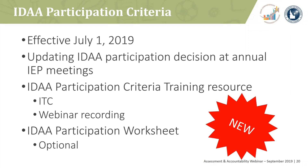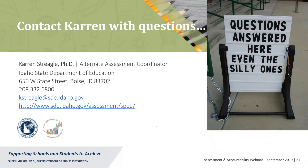The new participation criteria is effective as of July 1, 2019. There are updates to the decision at annual IEP team meetings, and participation criteria resources are available on the Idaho Training Clearinghouse. There was a webinar hosted back in June, and there is an alternate assessment participation worksheet you can use to help you in that decision matrix. Dr. Striegel is always available if you have questions, so please reach out to her.